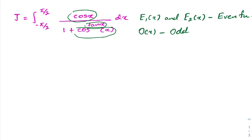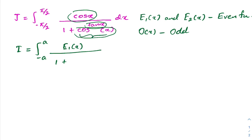So I'm going to generalize the integral. I define I equal to the integral from minus a to a, where in the numerator I take e1(x) — an even function — over 1 plus e2(x) raised to the o(x), where o(x) is an odd function, dx.